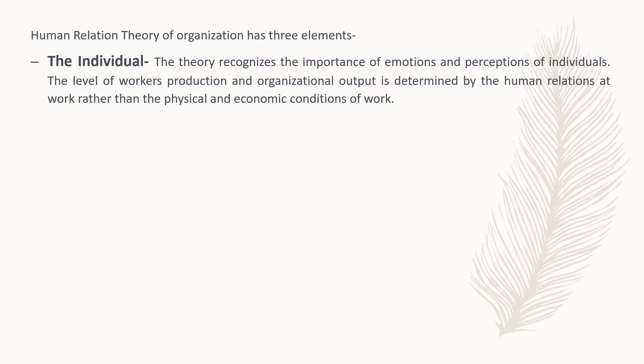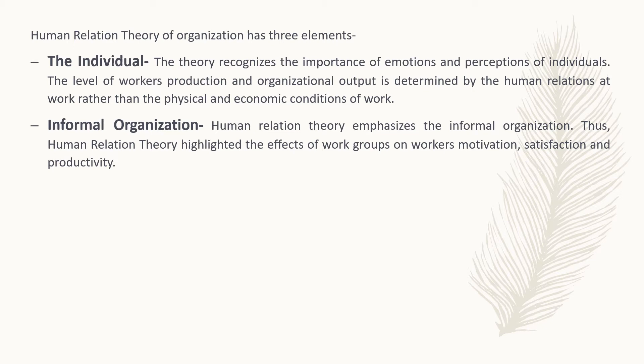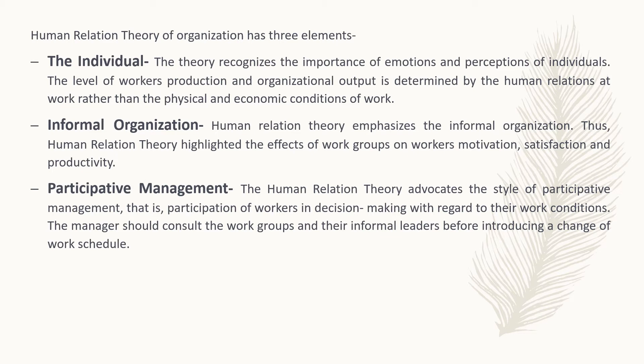Now we will see the three elements of human relation theory. First is the individual: the theory recognizes the importance of emotions and perceptions of individuals; the level of workers' production and organizational output is determined by human relations at work rather than physical and economic conditions. Second is the informal organization: human relation theory emphasizes the informal organization, highlighting the effects of a work group on workers' motivation, satisfaction, and productivity. Third is participative management: the theory advocates participation of workers in decision-making regarding their work conditions, and managers should consult the work group and informal leader before introducing changes.